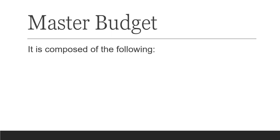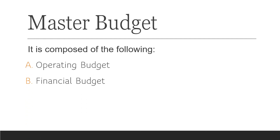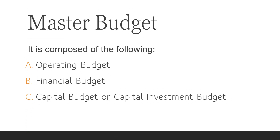The master budget represents a summary of all management's plans and goals for the future. It covers a period of one year or less, and outlines the way in which these plans are to be accomplished. The master budget is composed of the following: first, the operating budget; second, the financial budget; and third, the capital budget or capital investment budget.